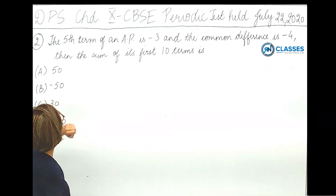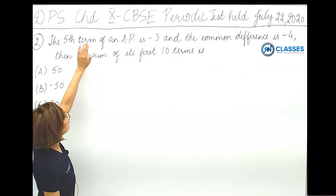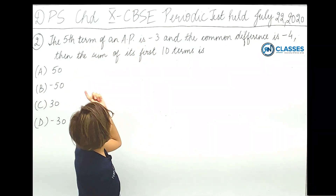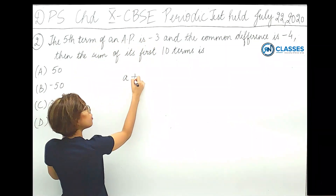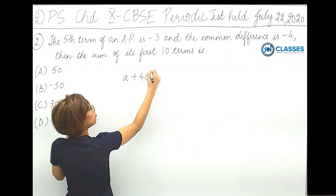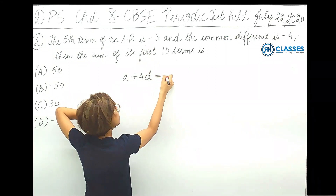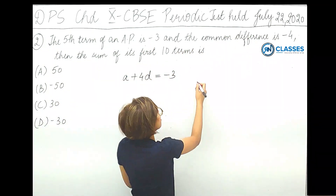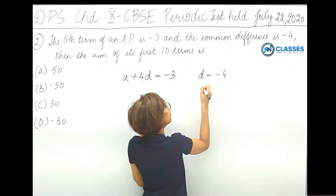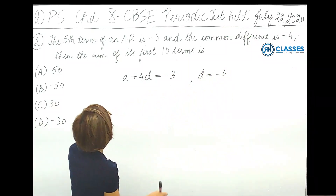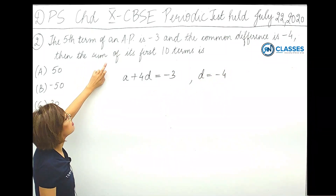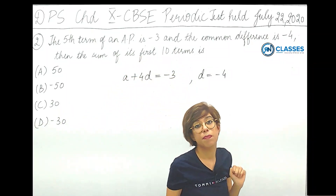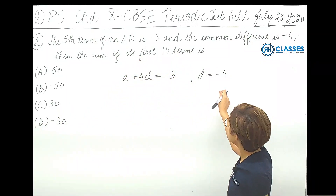The next question: the fifth term of an AP is minus 3, so a plus 4d equals minus 3, and the common difference d is minus 4. We need to find the sum of the first 10 terms.